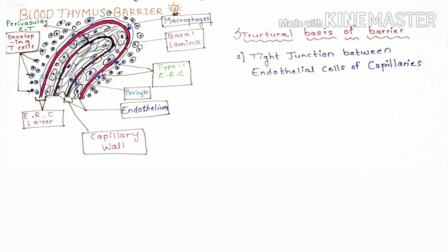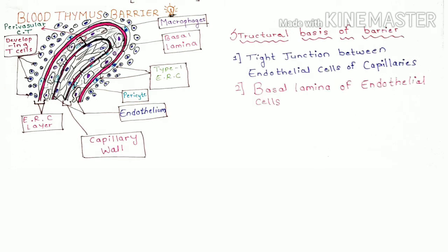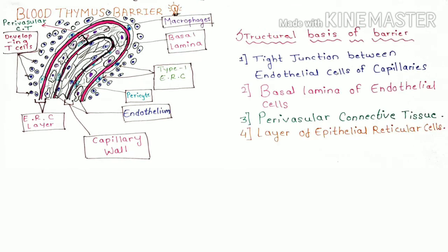Macromolecules cannot pass from the capillary to the thymic parenchyma, thus protecting the maturing T lymphocytes. The structures involved in forming the blood-thymus barrier are: first, the tight junctions between the endothelial cells of capillaries; second, the basal lamina of endothelial cells; third, the perivascular connective tissue; and fourth, the layer of epithelial reticular cells. These four structures together form the blood-thymus barrier.